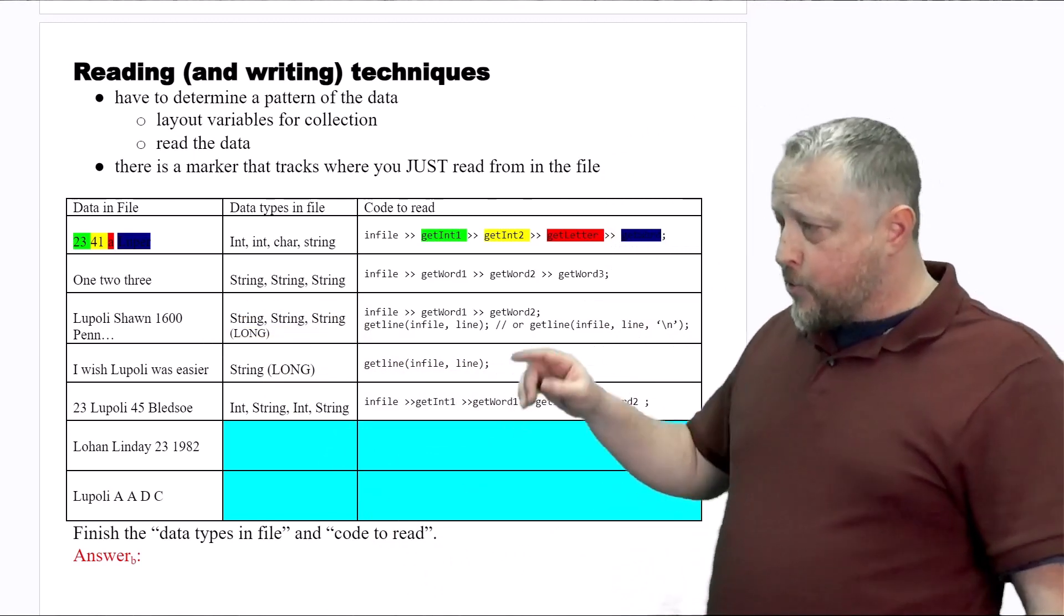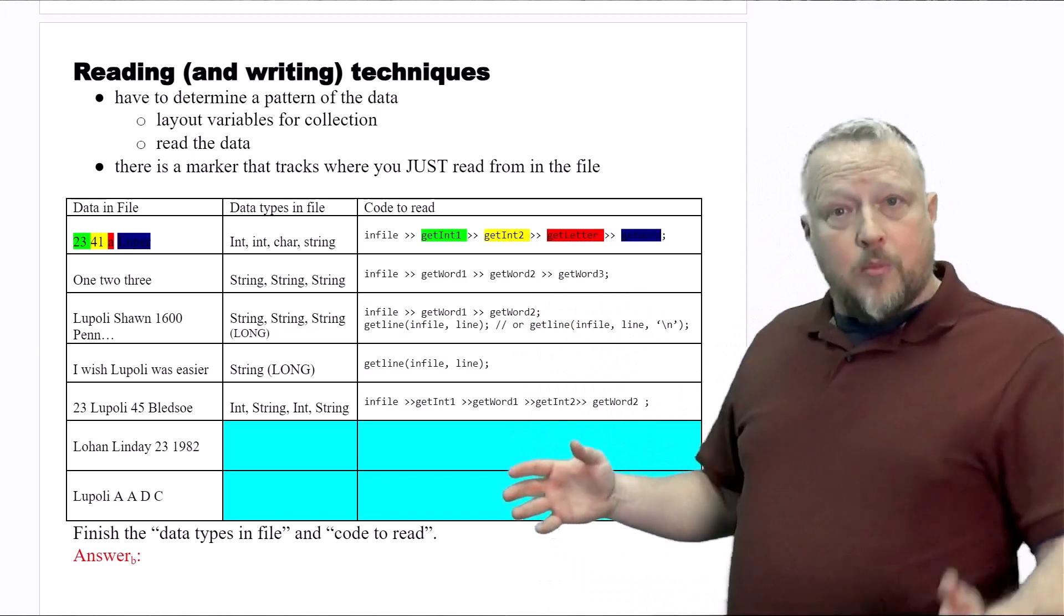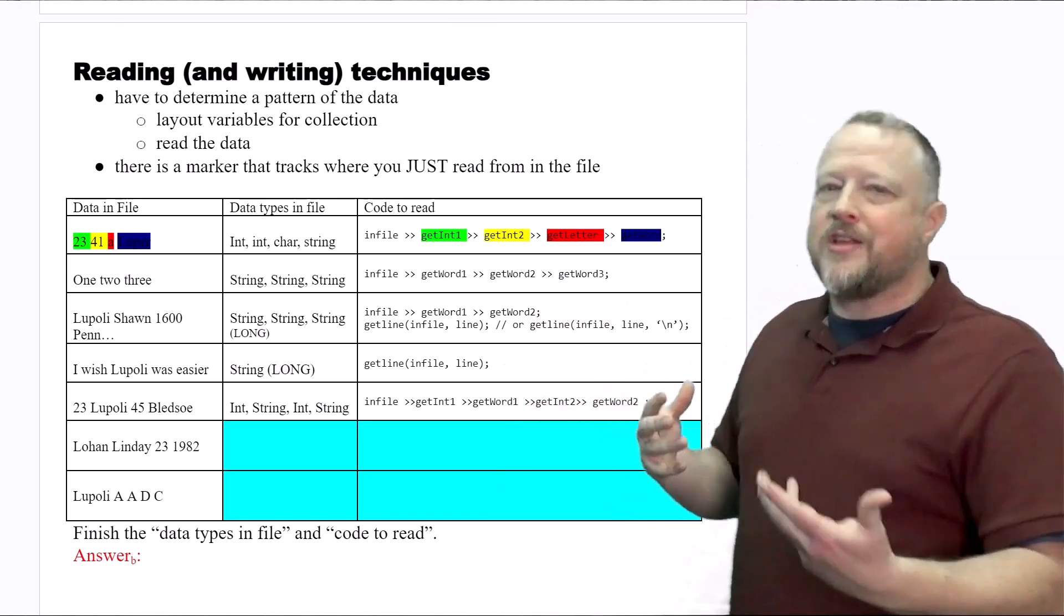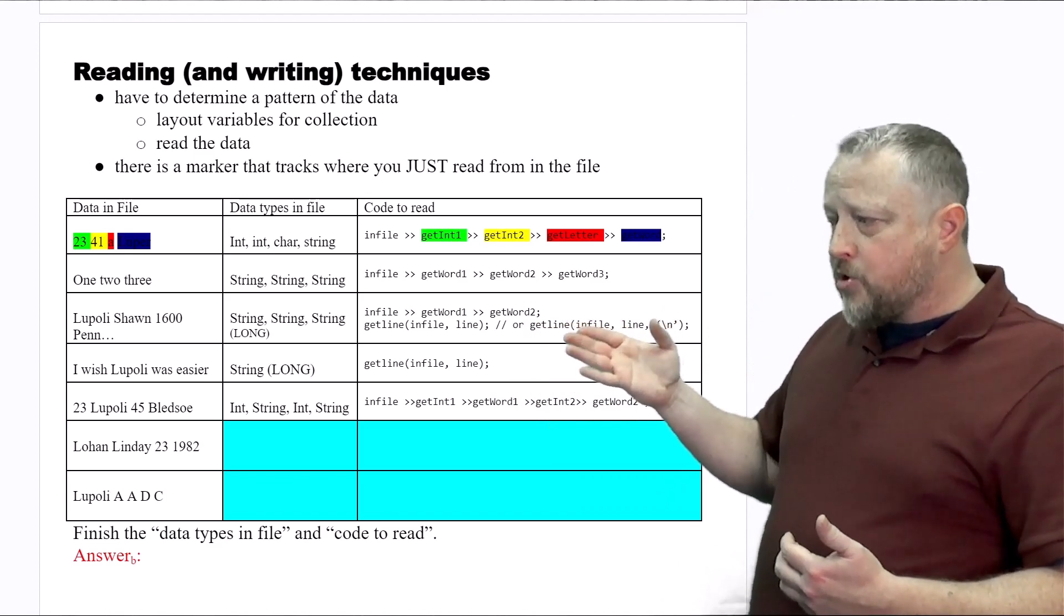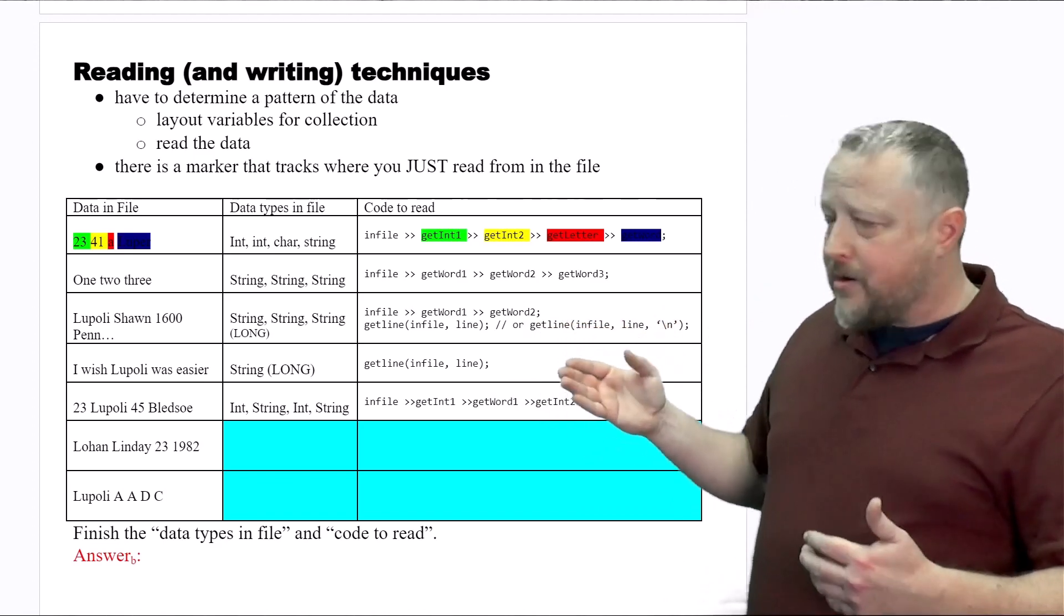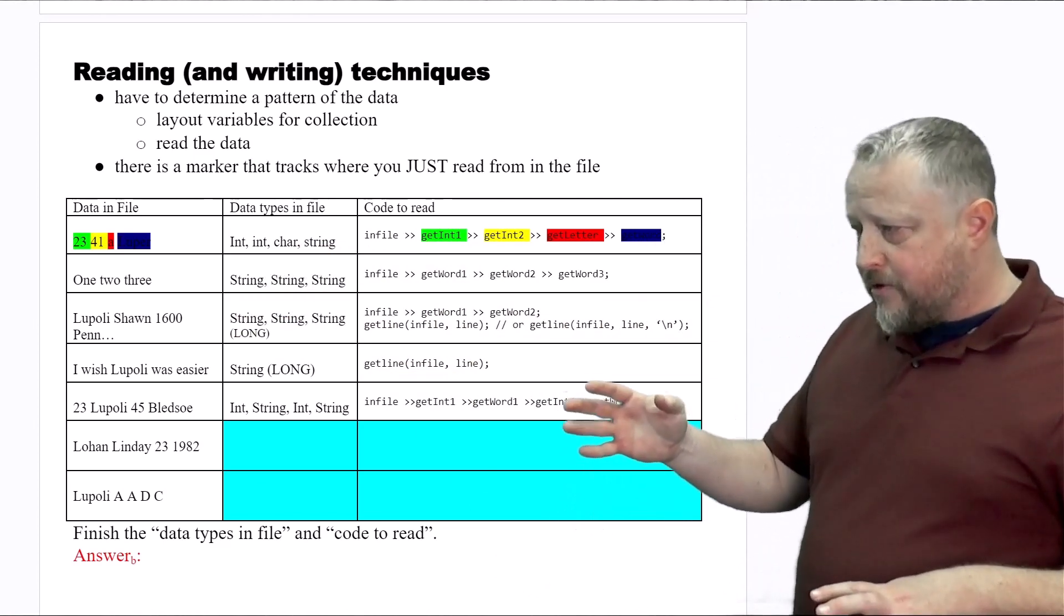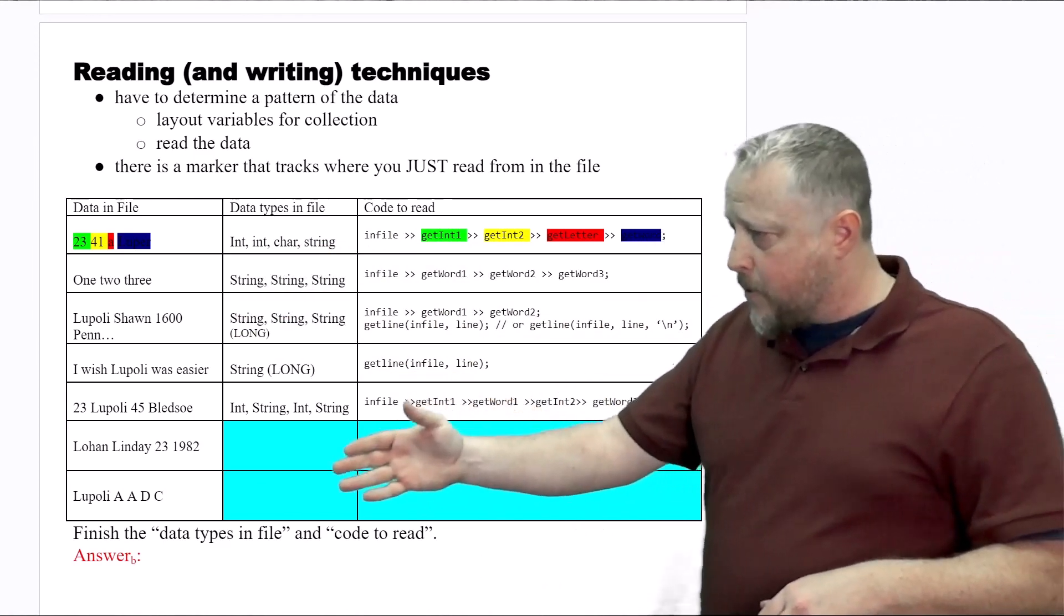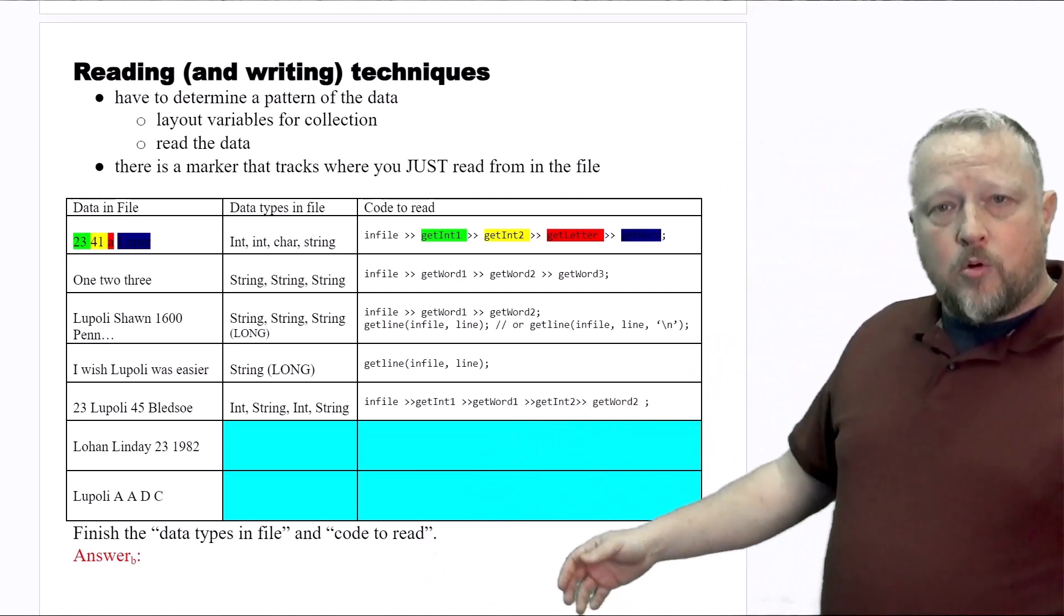So when you go back to your notes, you're going to see 1600 on the next line down. I want you to see that I made a mistake. I want you to see how I'm diagnosing it because the code's telling me what's supposed to happen in the data file. So what I want you to do is go ahead and finish up these next two. You're going to tell me what data types of the file I use and then the code to read them.